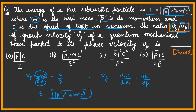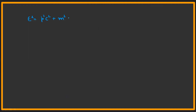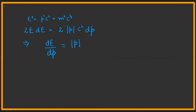We need to find dE/dp to get the group velocity. We have E² = p²c² + m²c⁴. Differentiating both sides: 2E dE = 2pc² dp. From this, dE/dp = pc²/E. So this is our group velocity.